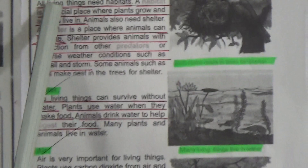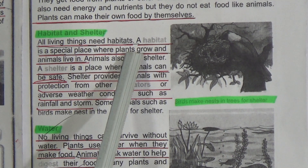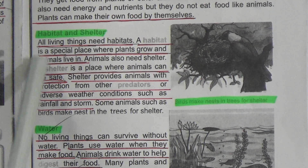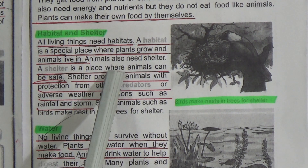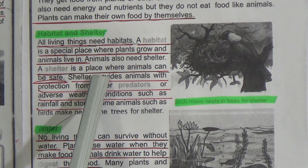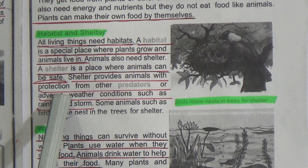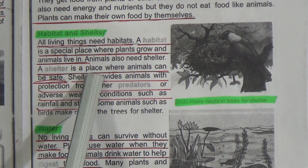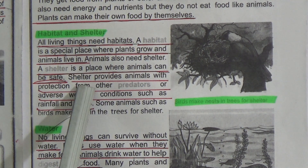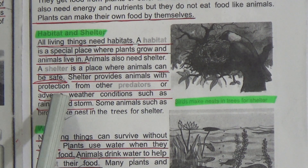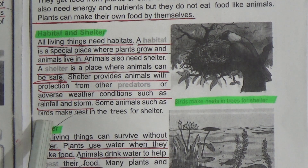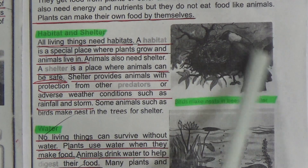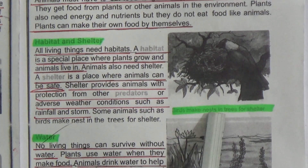The next topic is 'Habitat and Shelter.' All living things need habitats. A habitat is a special place where plants grow and animals live in. Underline this line. Animals also need shelters. A shelter is a place where animals can be safe. Underline this line. Shelter provides animals with protection from other predators or adverse weather conditions such as rainfall and storm. Some animals such as birds make nests in the trees for shelter.